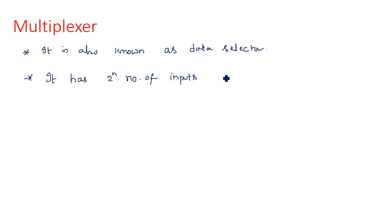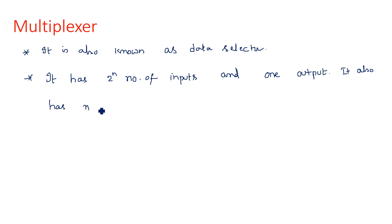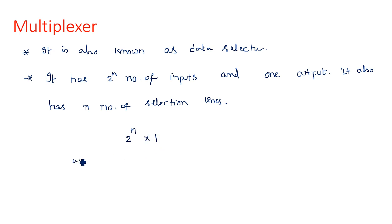A multiplexer has 2^n number of inputs, one output, and n number of selection lines. The size of a multiplexer is referred to as 2^n by 1, where n indicates the number of selection lines.